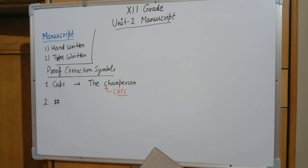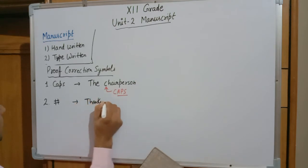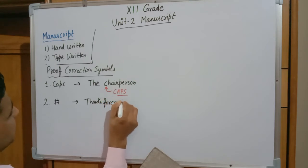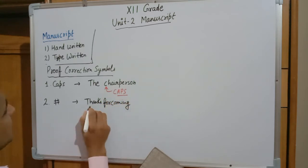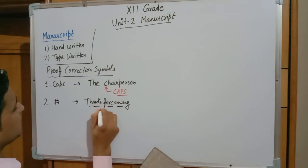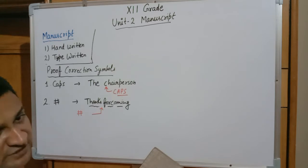The second sign is Hash. As the name suggests, it is for giving space in a proper manner. For example, if I write 'thanks for coming' as three words without any space between them, that is the problem. Hash is used to insert the required space — your space should be equal and consistent throughout the content.